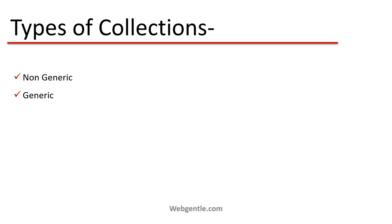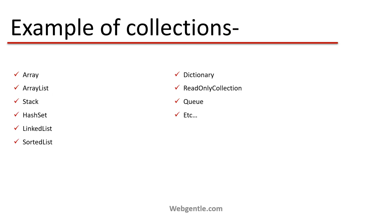Now let's see the different types of collections. There are two types: non-generic and generic. We will start with non-generic, and once we are expert in that we will move to generic collections. There are several examples of collection types available in the .NET framework: Array, ArrayList, Stack, HashSet, LinkedList, and more. We will be learning all the collections available in .NET throughout this series.